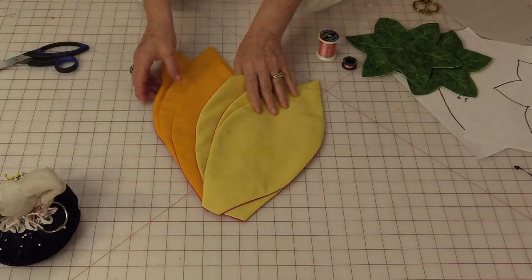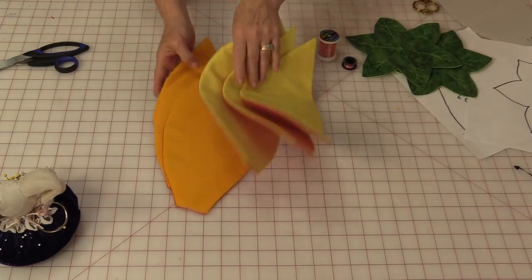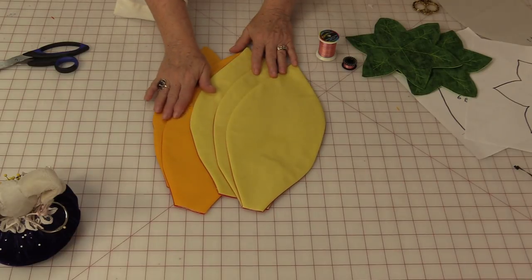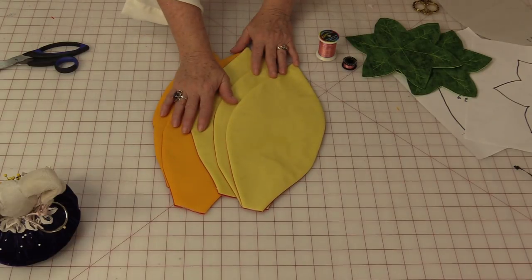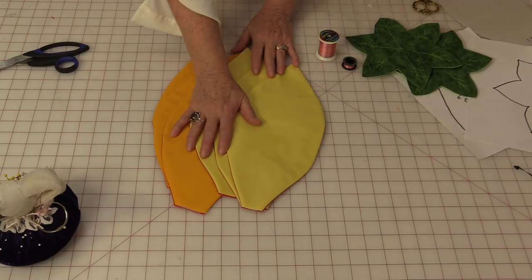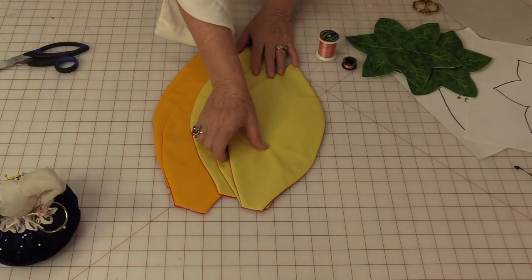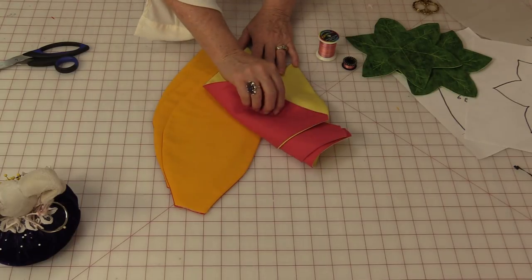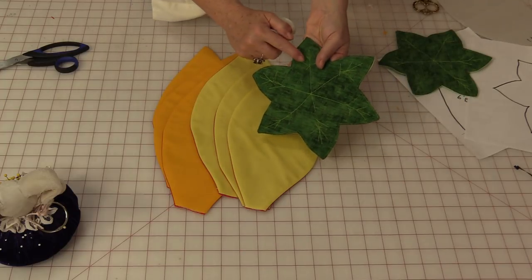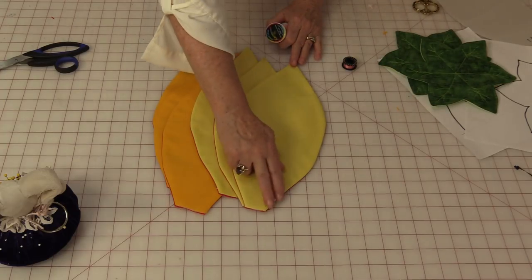I have six big petals. Now you can do them all in the same color or you can switch up the colors. This took four fat quarters so I had one of each of the colors. I'm going to put the stitching, like I did on the leaves, for the petals.